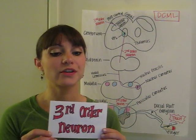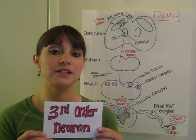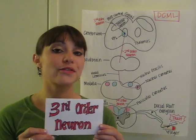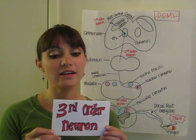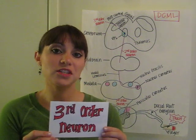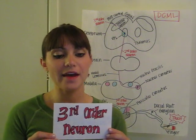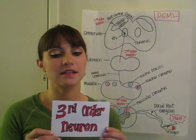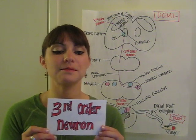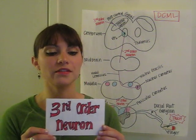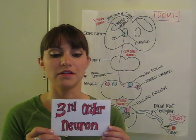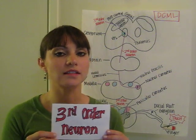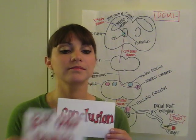Third order neuron starts in the VPL, through the internal capsule, which is white matter. Then out it comes and synapses on the brain, on the post-central gyrus of the parietal lobe.